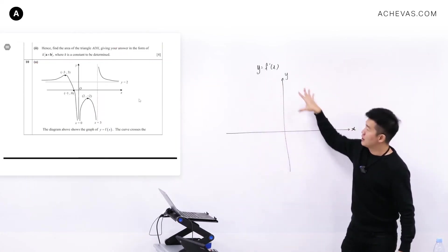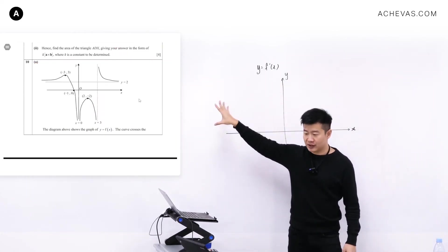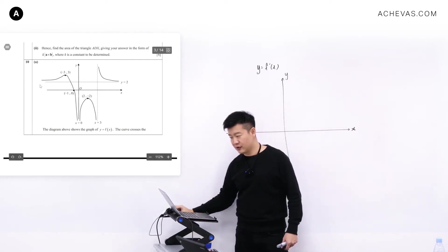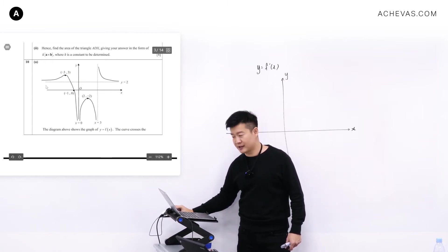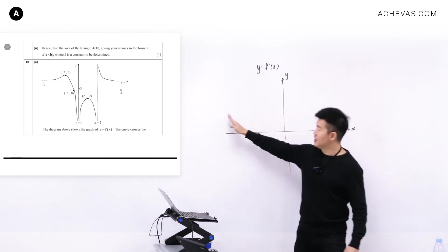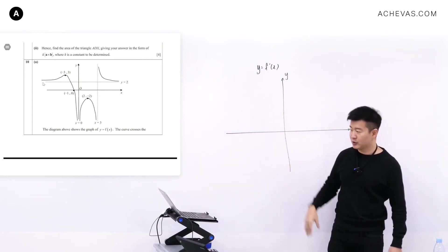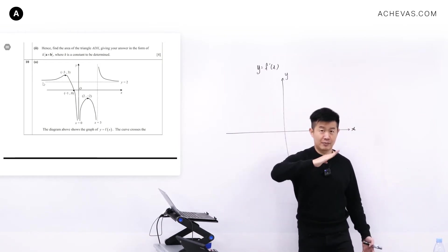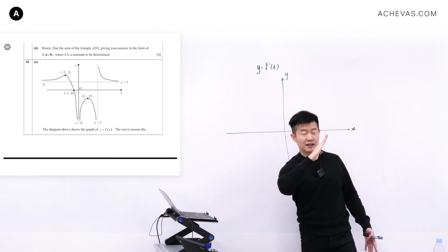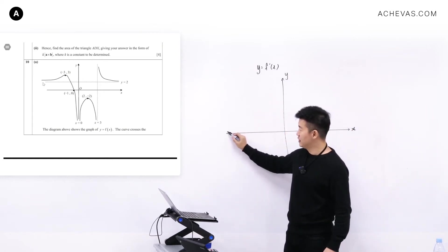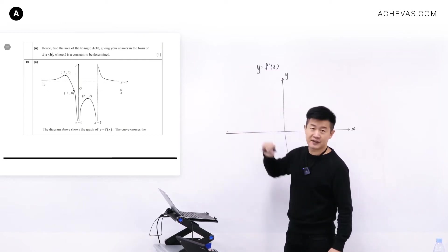The y-coordinate on this graph is going to represent the gradient on that graph. So let's trace through the gradient from left to right. This is the graph of y equals f(x) and my focus is extracting the gradient for the corresponding x. When x is all the way to the left, what is the gradient? It's a small positive number — not exactly horizontal, still tilted a little bit. So it's going to be a small positive y-coordinate, somewhere here, because the y-coordinate represents the gradient.